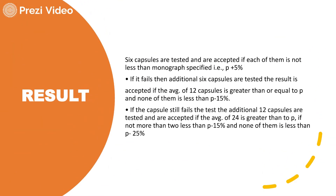The same interpretation criteria as for tablets are applied here. Six capsules are initially tested and accepted if each one is not less than the monograph-specified value Q plus 5%. If this fails, another six are tested; the average of 12 capsules should be greater than or equal to Q, and none should be less than Q minus 15%.